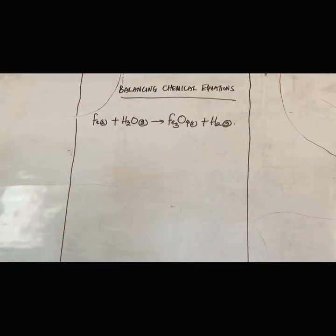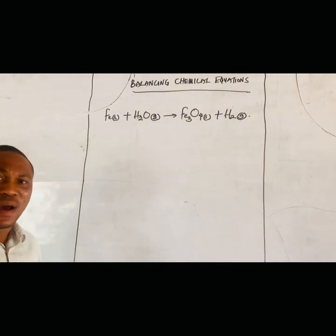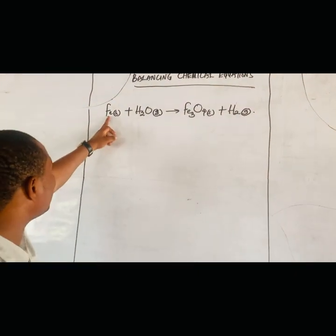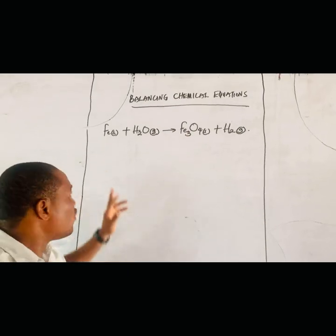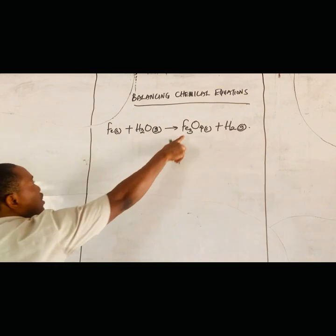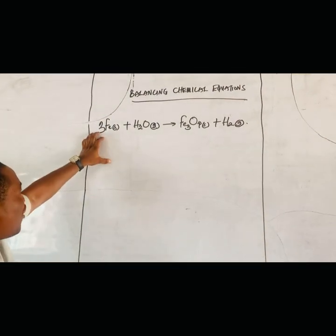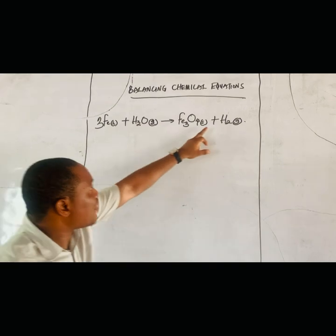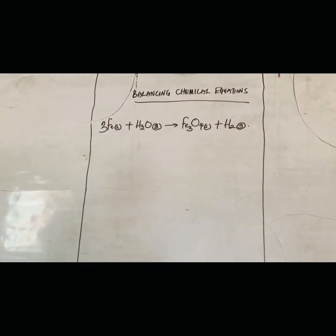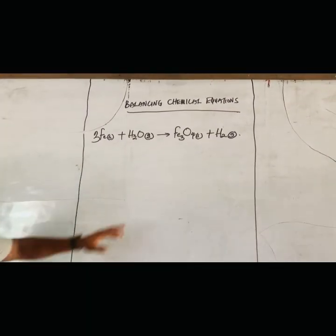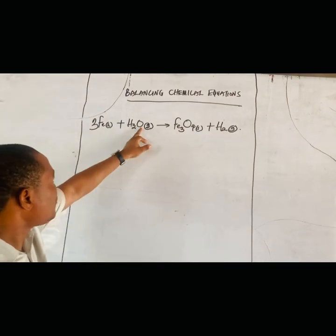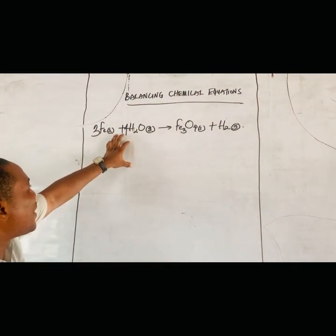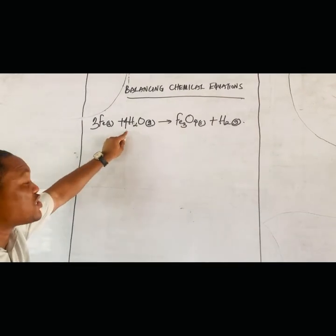We balance using coefficients — that is just what we do. We look at the number of atoms on each side. I have one iron here and three iron here, so that is not balanced. I put 3 in front of iron on the reactant side. Now three iron equals three iron — balanced. I have two hydrogen here and two hydrogen there — that is balanced. Now look at oxygen: I have four oxygen here and one oxygen on the reactant side, so I put 4 in front of water.